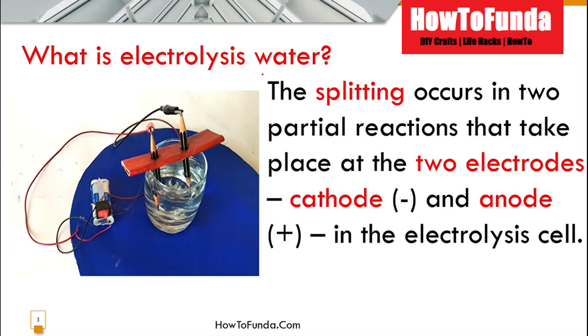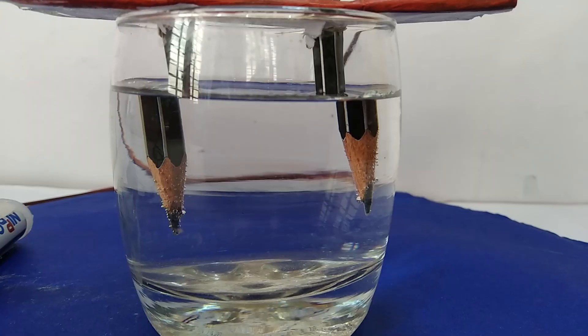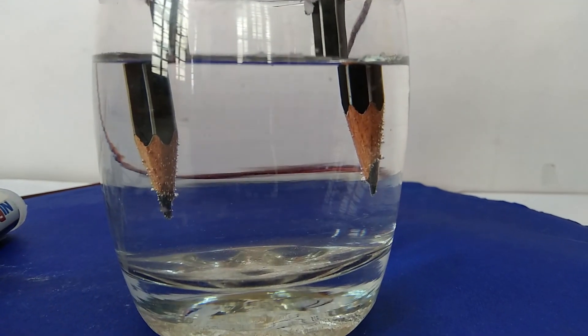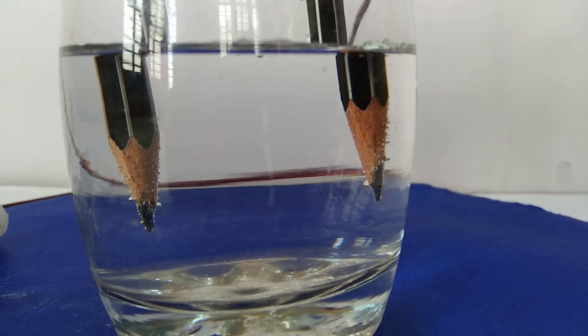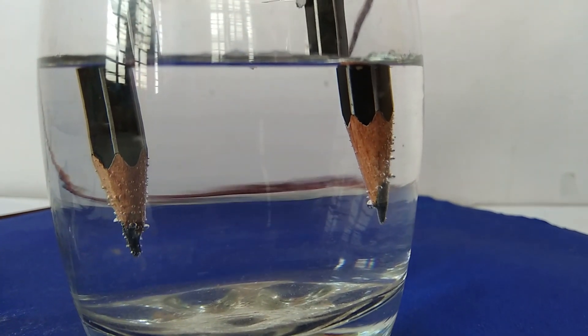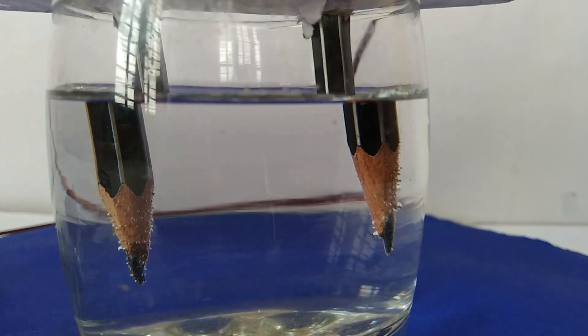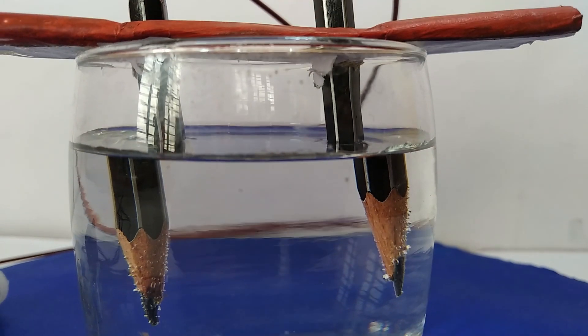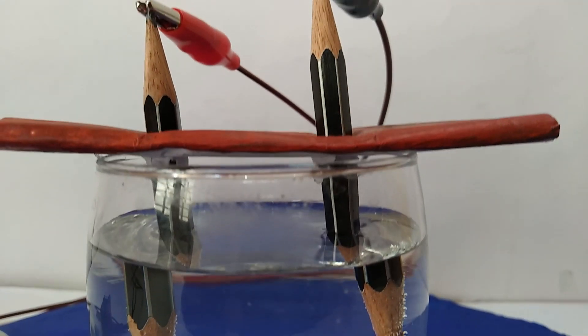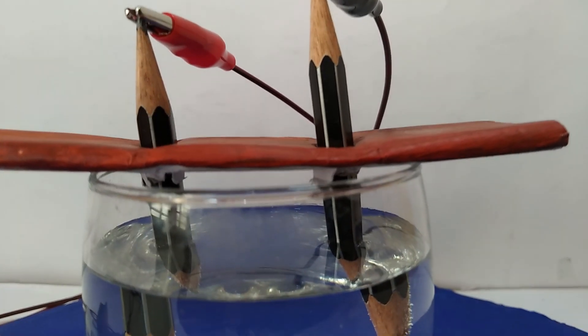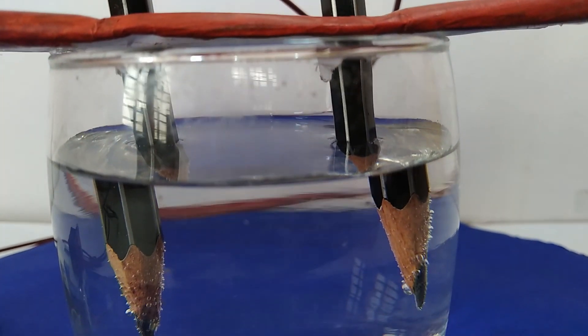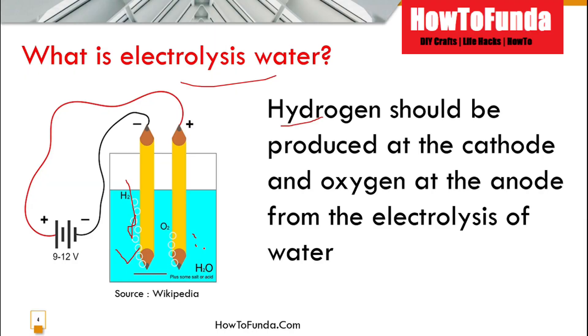During electrolysis of water, there will be a reaction because we have two electrodes inserted into the water. Hydrogen is normally produced at the cathode—you can see more bubbles coming at the hydrogen side. Oxygen is produced at the anode. The anode is positive and the cathode is the negative terminal.